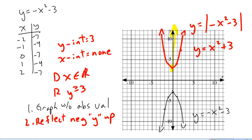Just a quick summary that works for all of these: first, do your graph without absolute values, and then take any negative y-values and reflect them up to turn them into positive y-values — they're reflected over the x-axis.